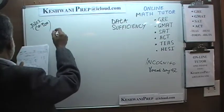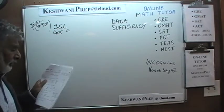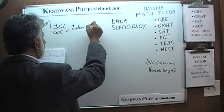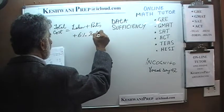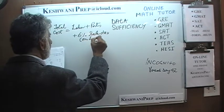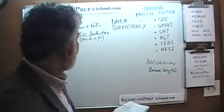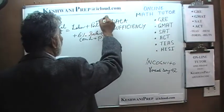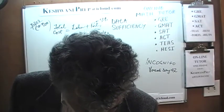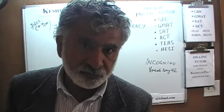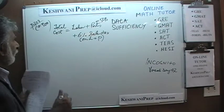Number 300. We are told that the total cost of a repair is labor plus parts plus 6% sales tax on both labor and parts. We are further told that the parts, excluding sales tax, were $50. The question is: what was the total charge for the repair?